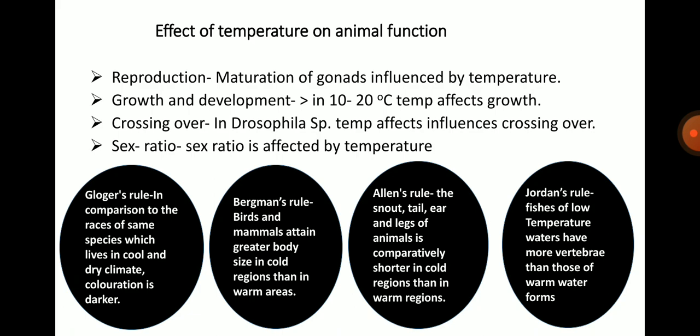In fruit flies, temperature affects crossing over and somatic expressions of gene characters. Development of wings and eyes is affected if larvae or pupae are kept at low or high temperature; wings tend to be longer at high and shorter at low temperatures. In rotifers and Daphnia, sex ratio is affected by temperature. Under normal conditions, Daphnia give parthenogenetic eggs that develop into females, whereas with increasing temperature they give sexual eggs which after fertilization develop either into males or females.